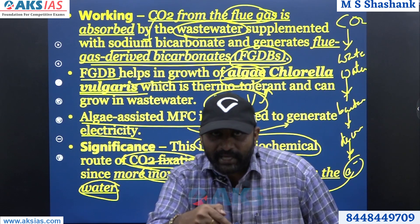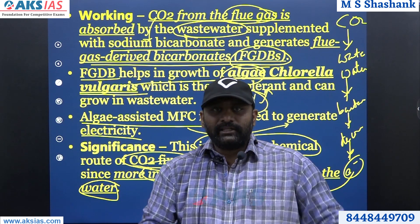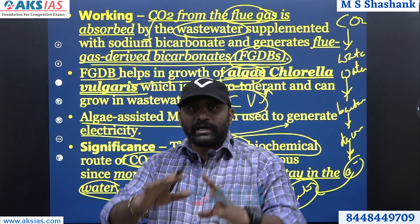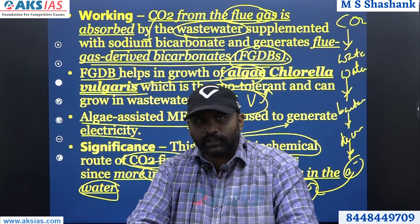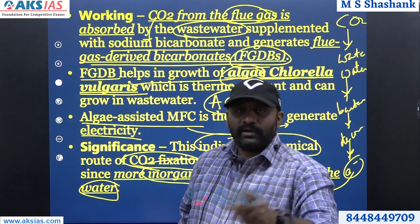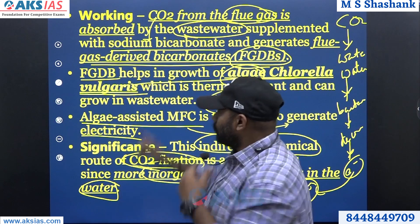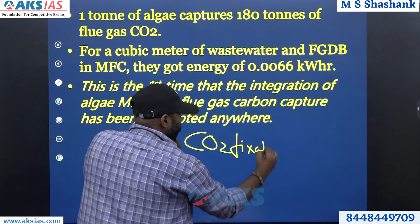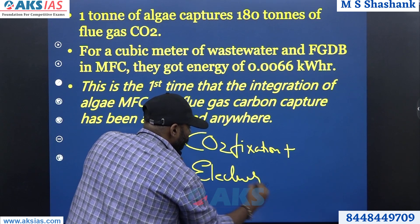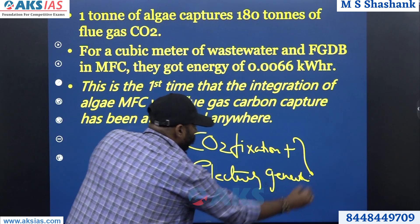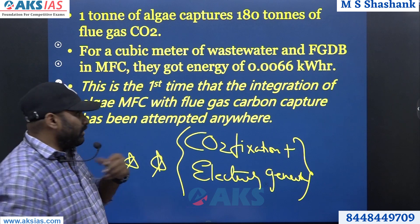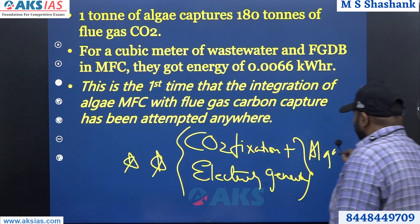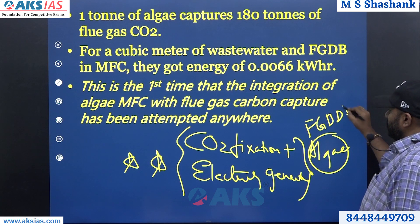Electricity generation is done without pollution. The carbon dioxide going into the water stays as carbonates — they settle down and don't pollute the water. That means carbon dioxide which would go into the air is now going into the water. Sodium carbonates and bicarbonates form, settle under the sea or ocean or wherever water sources are, and do not pollute the water. So carbon dioxide fixation is done and electricity generation is done — both very very important for protecting the environment.